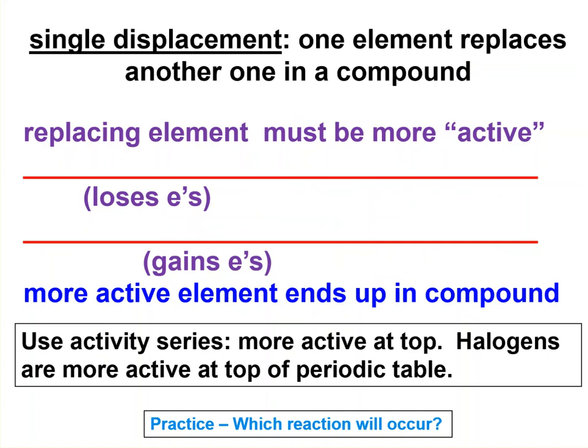We're going to look at some single displacement or replacement reactions because they're all redox. In order for a single replacement reaction to occur, the element that is replacing one from the compound must be more active than the one it's replacing.